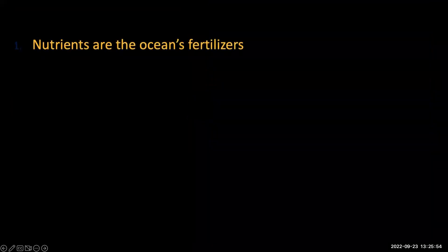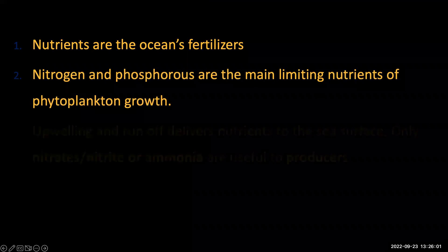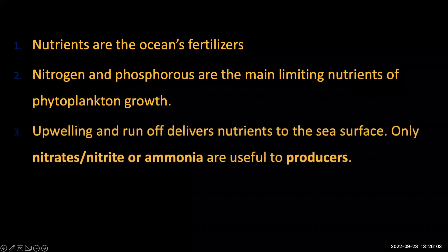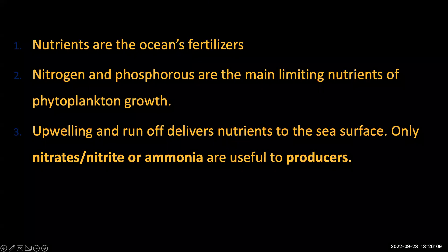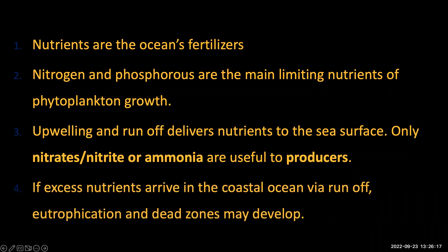To summarize: nutrients are the ocean's fertilizers. Nitrogen and phosphorus are the main limiting nutrients of phytoplankton growth. Upwelling and runoff deliver nutrients to the sea surface. Only nitrates and ammonia are useful to producers. If excess nutrients arrive in the coastal ocean via runoff, eutrophication and dead zones may develop.